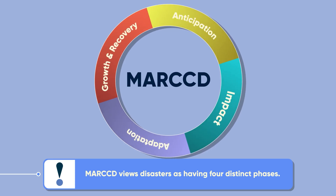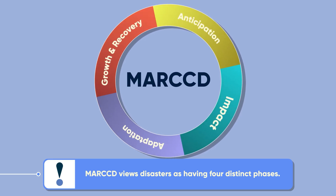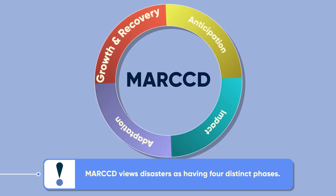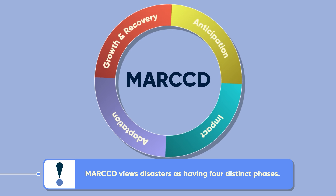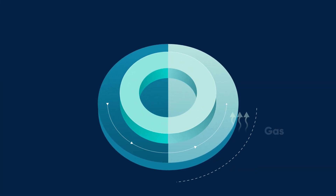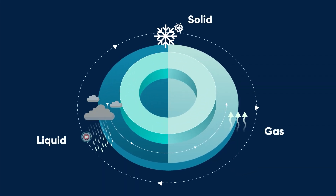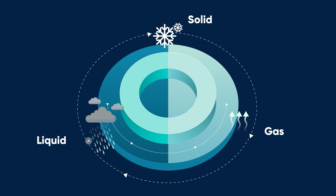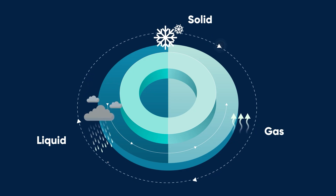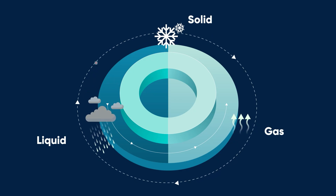The four phases are: anticipation, impact, adaptation, and growth and recovery. Like water changing from solid to liquid to gas, disaster phases are complex and can shift back and forth. Multiple phases can also coexist, just like water.